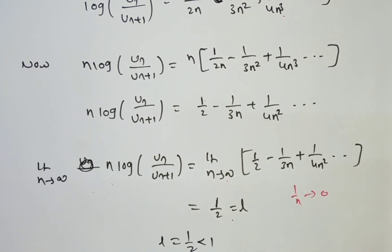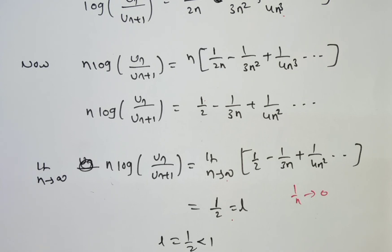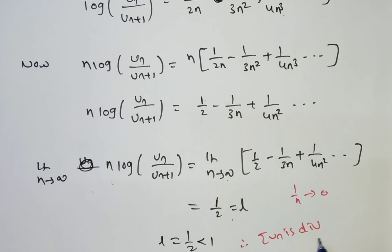Since L = 1/2, which is less than 1, the series is divergent by the logarithmic test. To summarize: if L > 1 the series is convergent; if L < 1 it is divergent; if L = 1 the test fails. Here L = 1/2 < 1, so the series ∑uₙ is divergent.